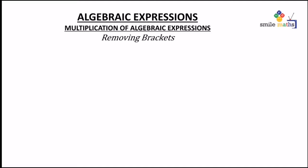Now let's look at another aspect: removing brackets. We have the example 8(x − 3). What we do here is 8 is going to multiply each and every term in the brackets. So we have 8 times x giving us 8x, then minus 8 times 3 giving us 24.